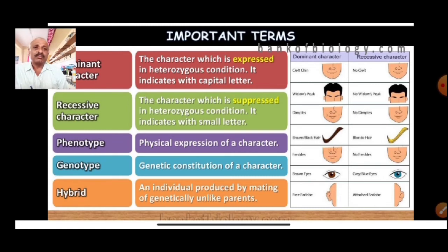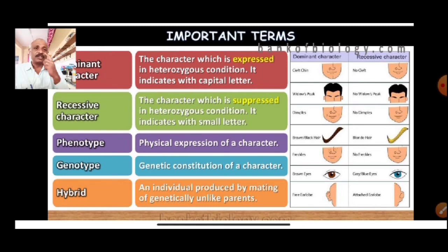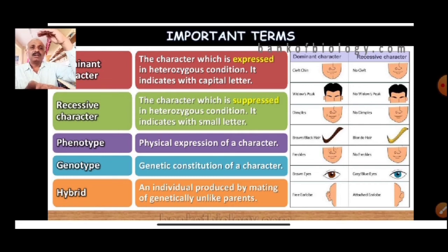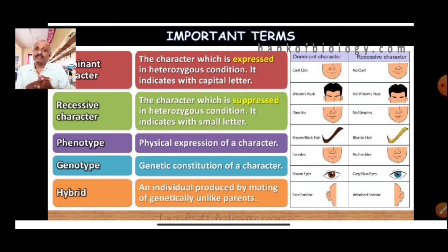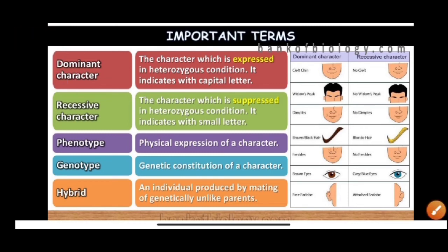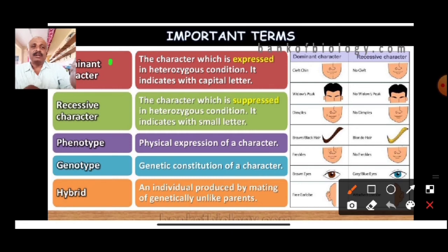The phenotype is the physical expression of the character. What the genes are, you cannot observe directly. Just the external appearance — we say it is called the phenotypic appearance or phenotypic characters. The physical expressions of a character, the outside expressions. For example, when you observe that it is a tall plant, that is the phenotypic expression. The tall plant — that is a phenotypic expression.